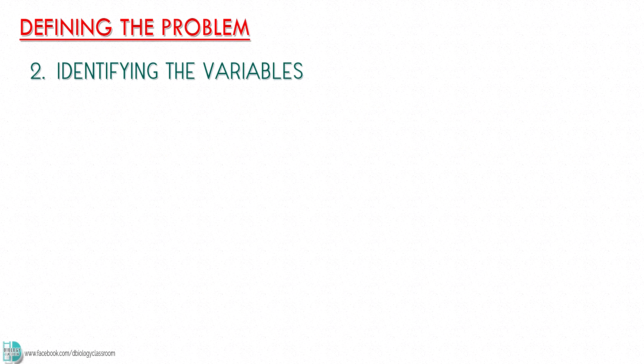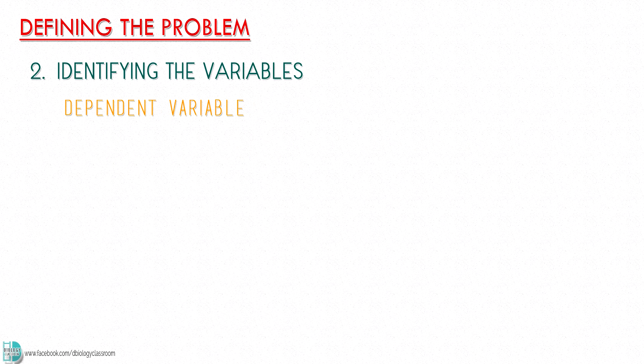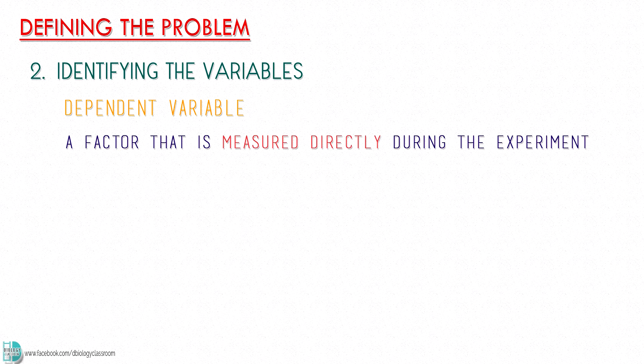Number two, identifying the variables. The first one is the independent variable, which is the factor that is manipulated or changed in the experiment or investigation. The second one is the dependent variable. It is a factor that is measured directly during the experiment.